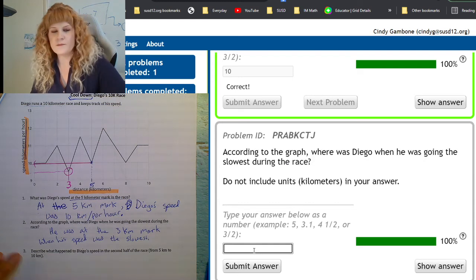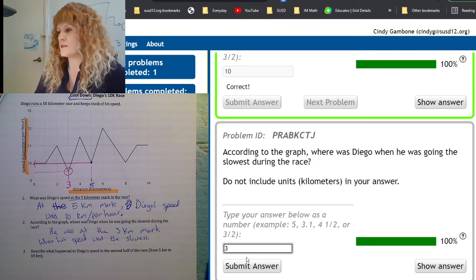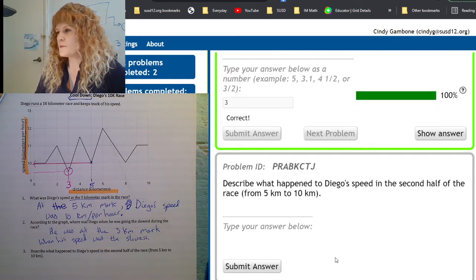Type in your answer. Just the number. Don't write three kilometers. It doesn't want units. Only the number. Next problem.